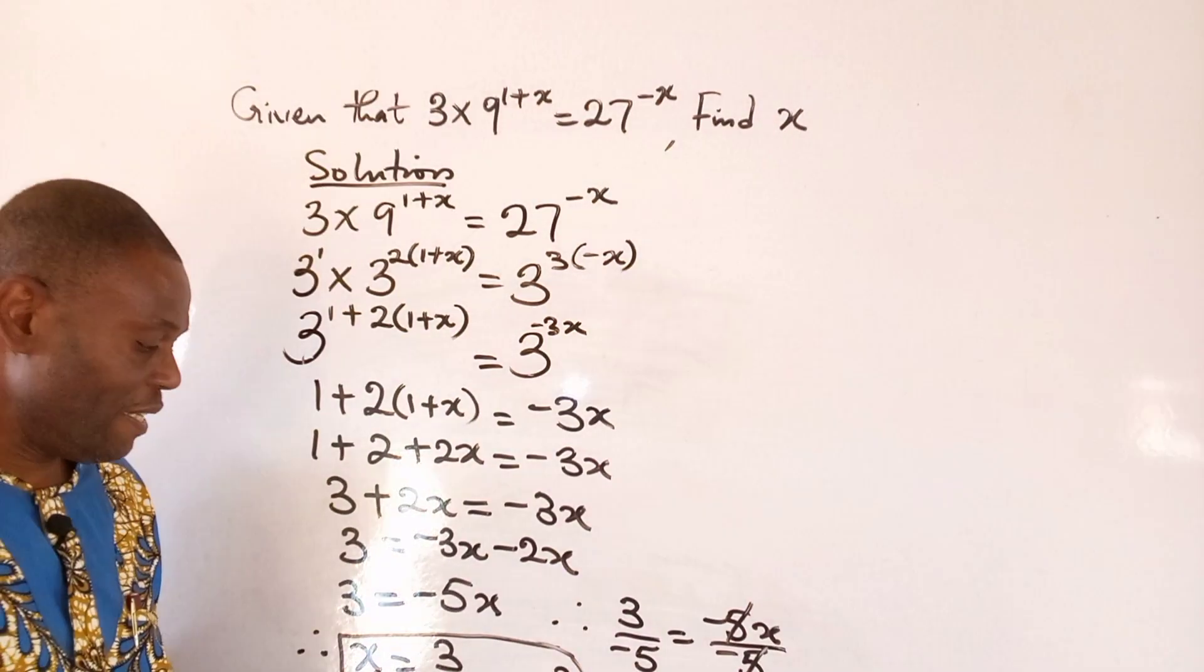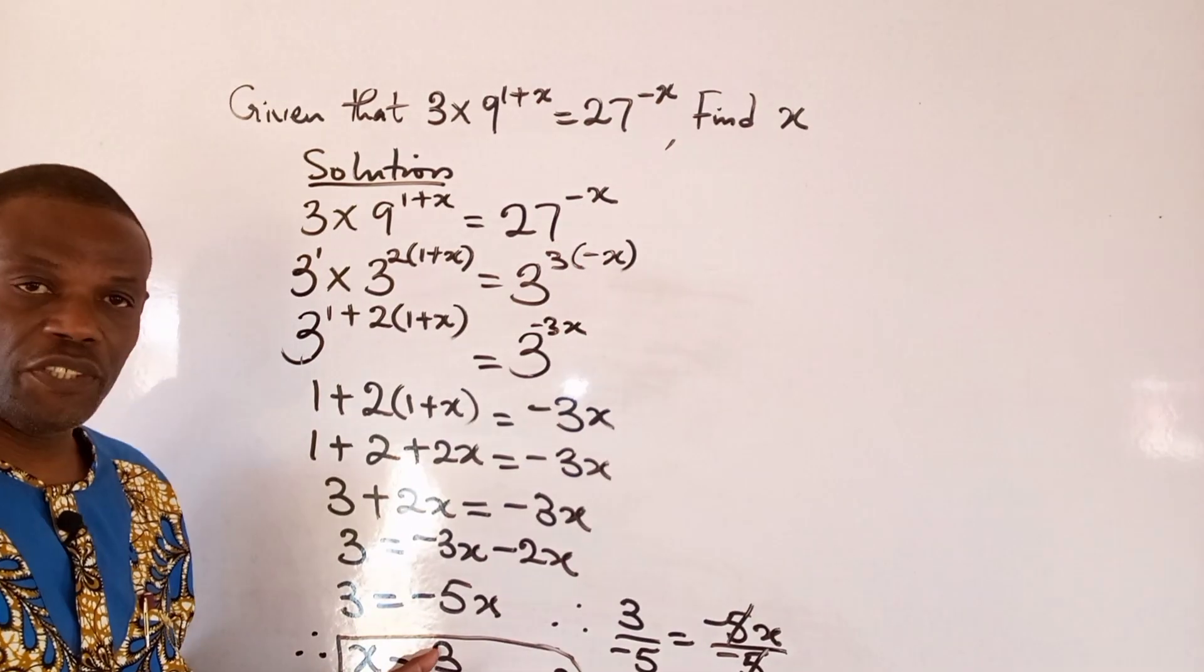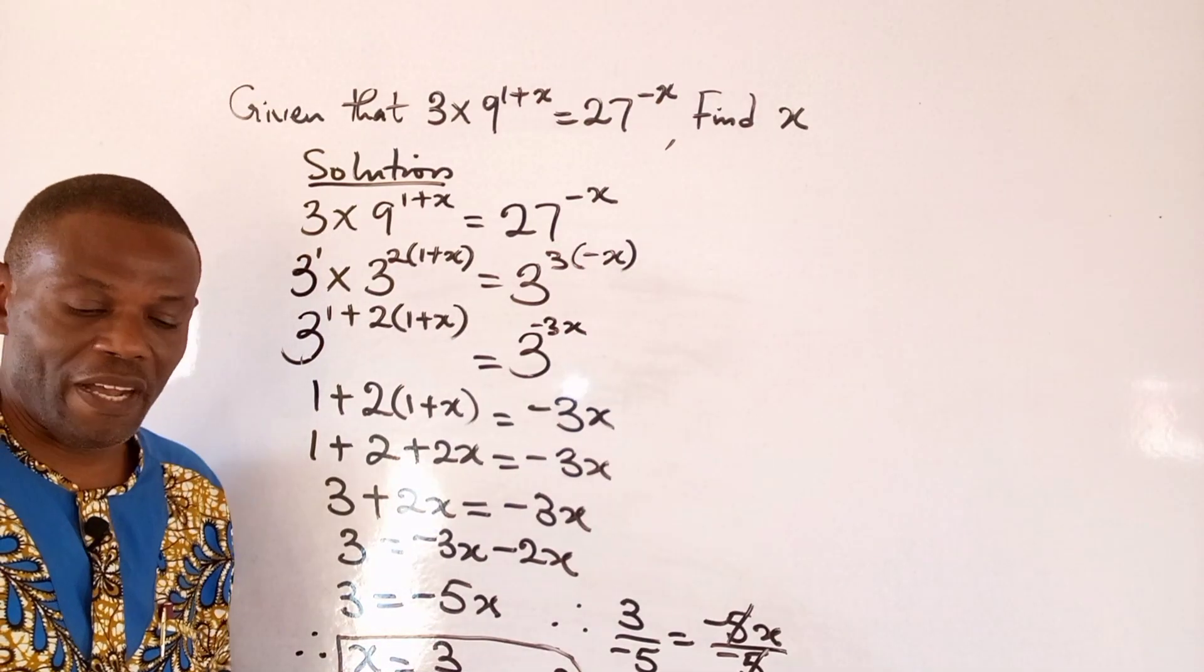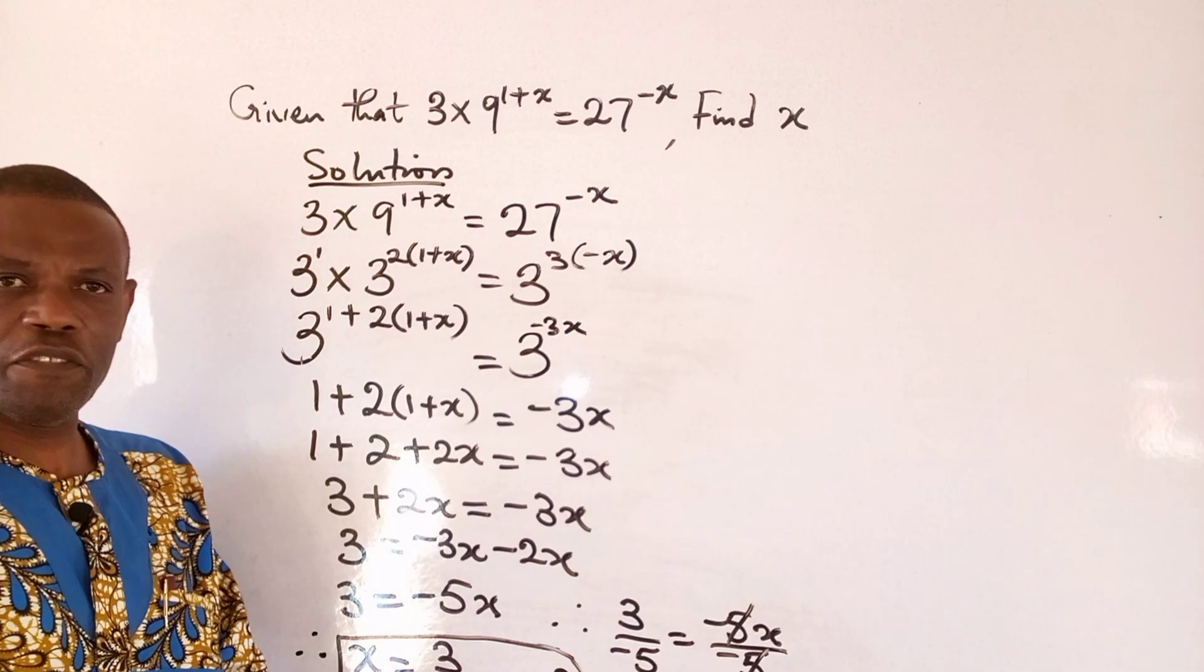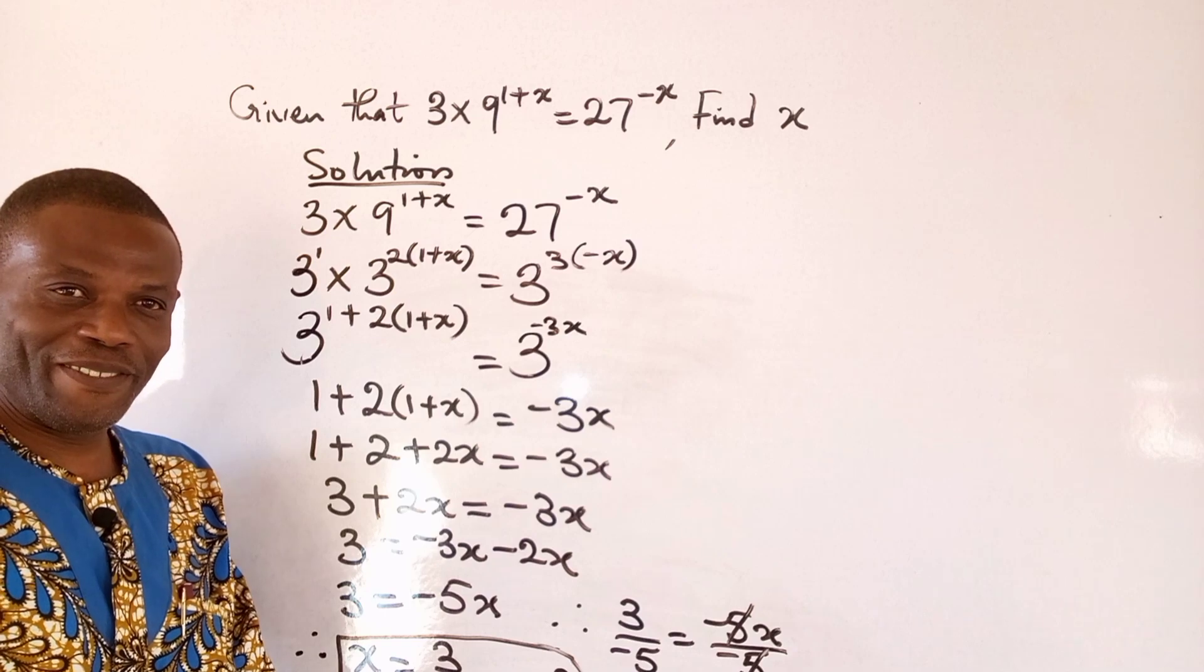So, x, the value here is x equals to minus 3 over 5 or 3 over minus 5. Thank you for listening. This is FisherMads. Please don't forget to subscribe to my channel. Goodbye.